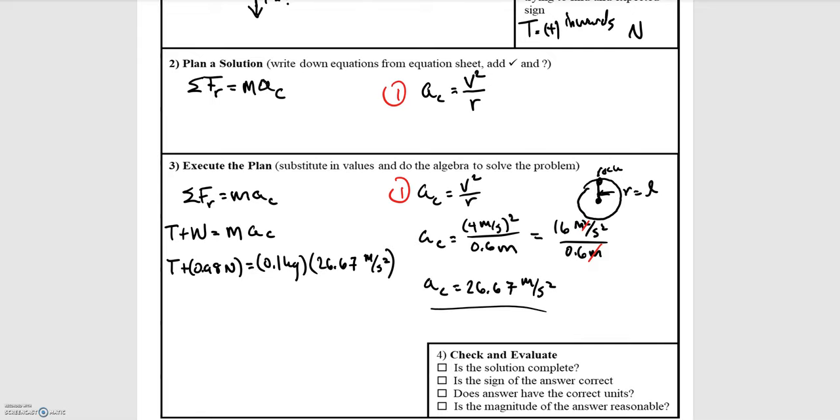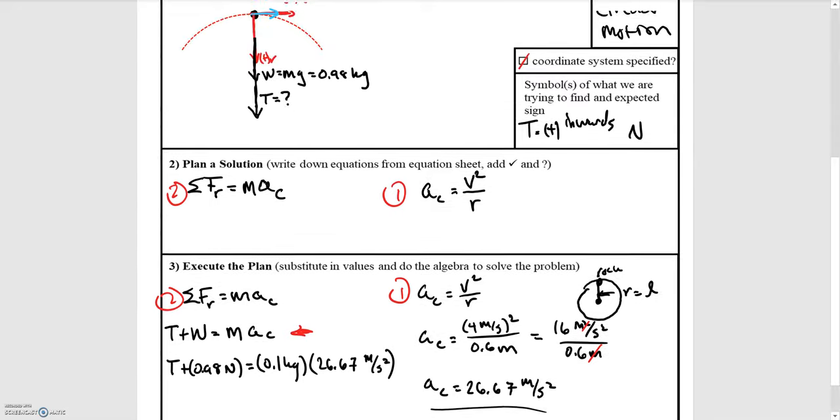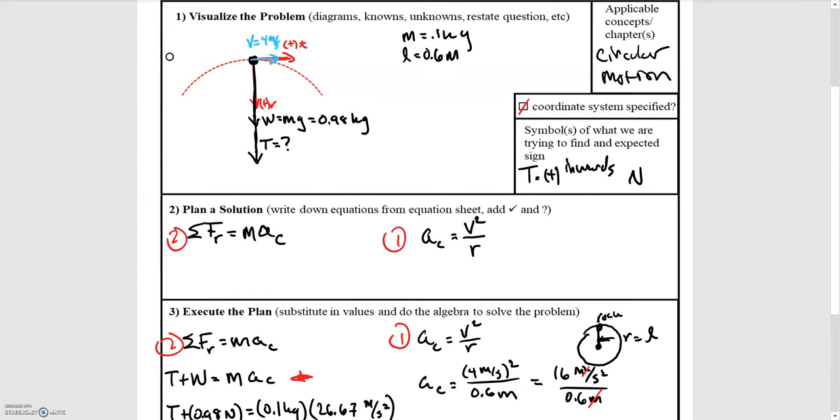Now that we know the acceleration at point A, we can use Newton's second law to solve for the tension. That's this step here to the left. We sum the forces. Should the tension and the weight force be negative since they're pointed downwards? This is where you want to ask yourself that question. You want to go back up to your free body diagram and see what coordinate system you chose. We pointed downwards, or towards the center of the circle, as positive.